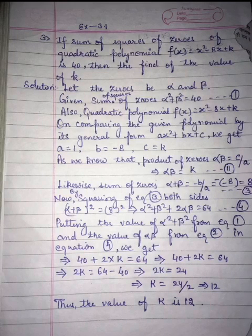Then we will get alpha squared plus beta squared, where we have 40, plus 2 multiplied by alpha beta value K from equation 2, is equal to 64. Now 40 plus, so here after the equal sign it becomes negative.